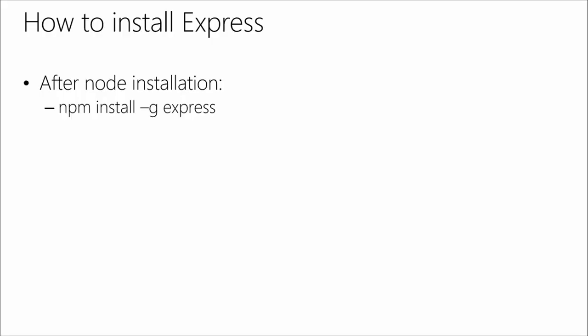You'll install Express once you've installed Node. We're going to get into NPM later on — that's basically the Node Package Manager that you can actually install modules from. It's similar to PIP for Python, Gems for Ruby, or NuGet for .NET. It's a package manager that allows you to keep a manifest and install packages whenever you need them.